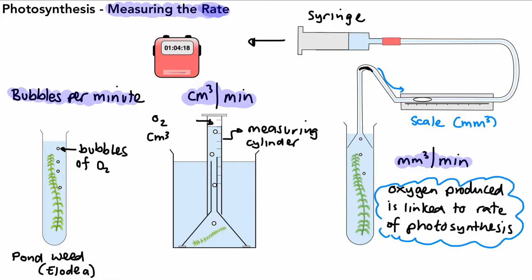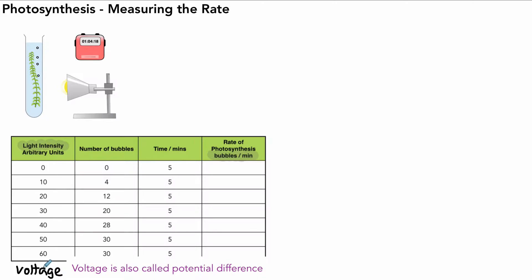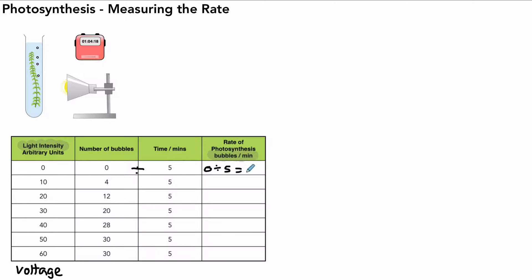Now let's look at how we might set up an experiment. In the first experiment, we have our pondweed, a lamp, and a timer, measuring bubbles per minute. For light intensity in arbitrary units, we change the voltage of the lamp to give different light intensities. We measure the number of bubbles over five minutes and then calculate the rate by dividing the number of bubbles by the time. For example, at zero light intensity, rate equals zero divided by five, giving zero bubbles per minute.